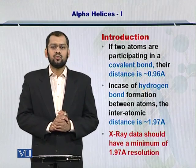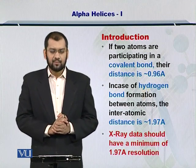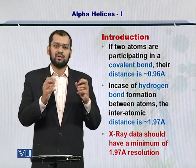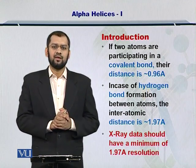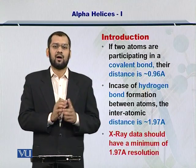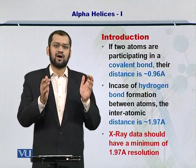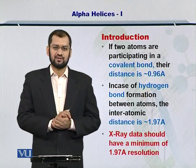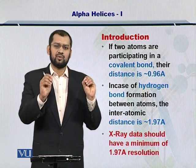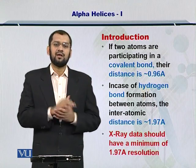Importantly, if two atoms in an X-ray structure are known to be 0.96 Angstroms apart, then this is typically an indication of a covalent bond that exists between these two atoms. However, if two atoms have been measured to be 1.97 Angstroms apart, or about 2 Angstroms apart, then this is an indication of the existence of a hydrogen bond between those two atoms. So by looking at the inter-atomic distances, we can talk about what kind of interaction may be occurring between those atoms.